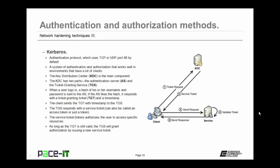The client then sends the TGT with the timestamp to the ticket granting service, or TGS. The TGS then responds with a service ticket — which can also be called an access token or just a token. The service ticket authorizes the user to access specific resources on that network. As long as the TGT is still valid, the TGS will grant additional authorization by issuing a new service ticket as required, for as long as the TGT and its timestamp are still valid.